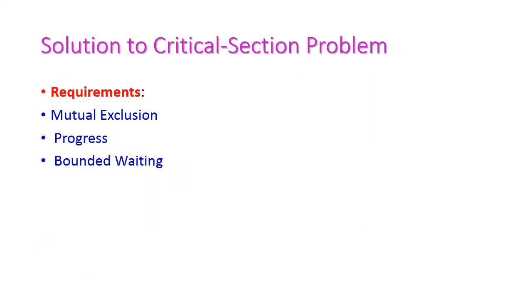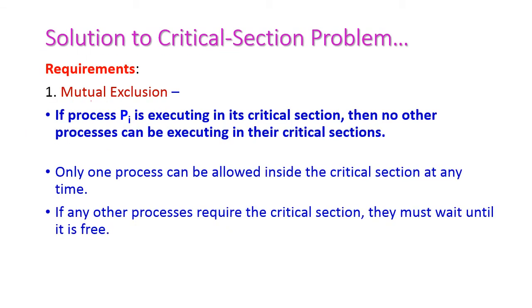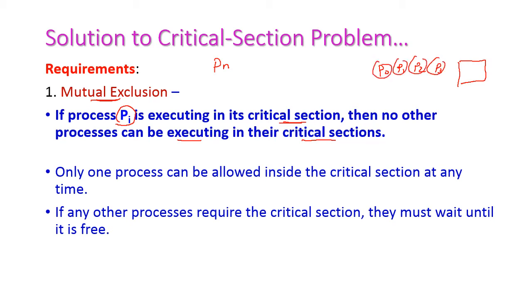Next, let us see the solution to the critical section problem. To get the solution there are three requirements: mutual exclusion, progress, and bounded waiting. These three are very important requirements. The first is mutual exclusion: if there are n processes and process Pi is executing the critical section, then no other process can be executing the critical section. For example, with processes P0, P1, P2, and P3 all wanting to enter the critical section, only one process can be allowed inside at a time.